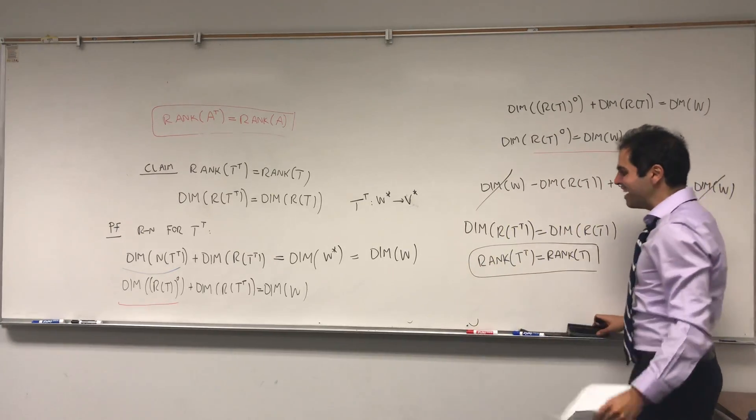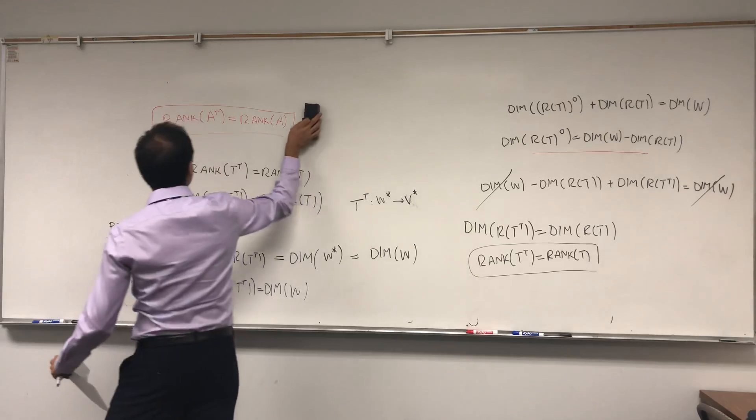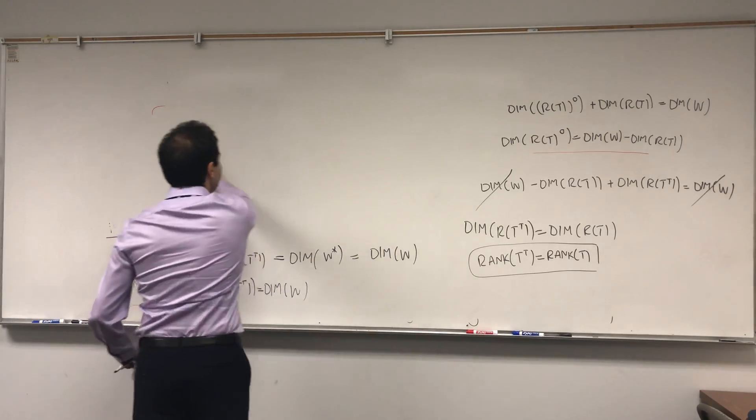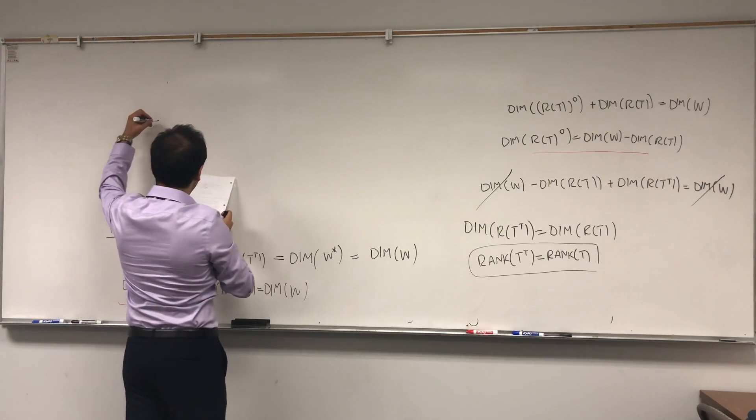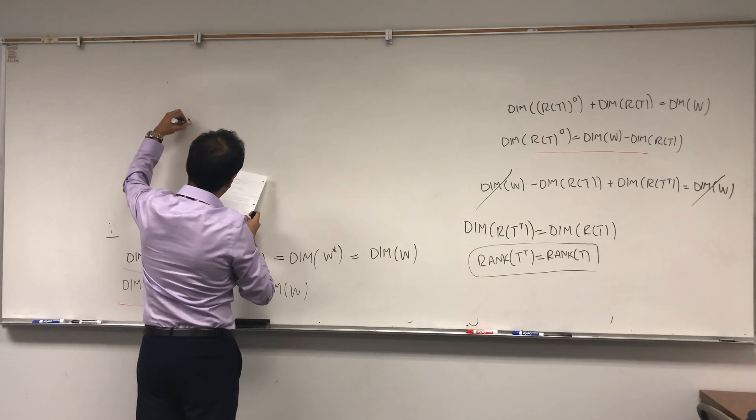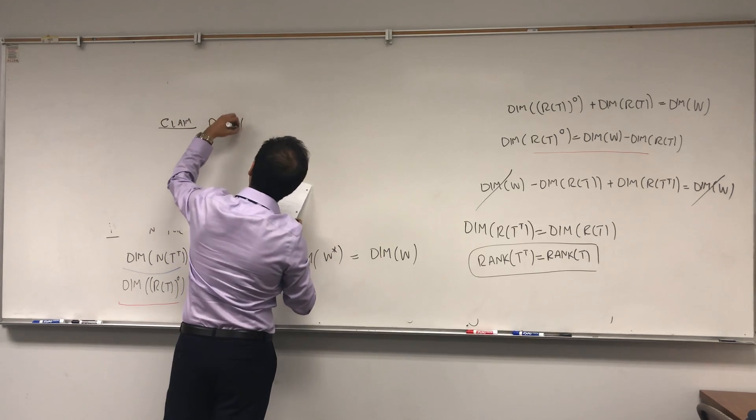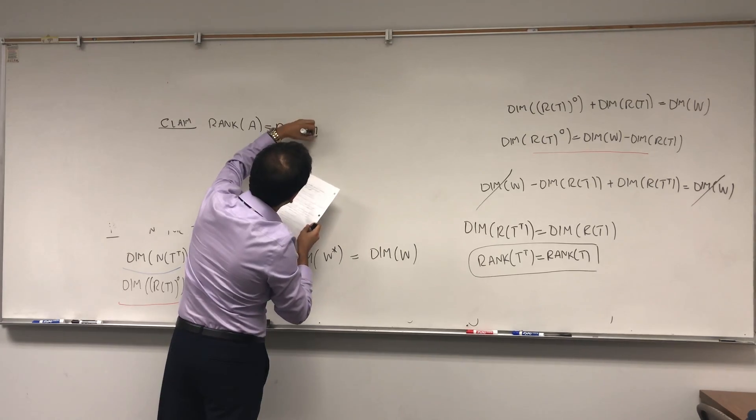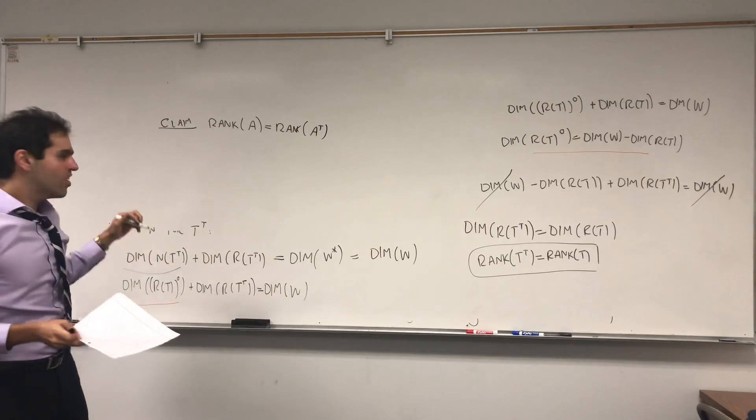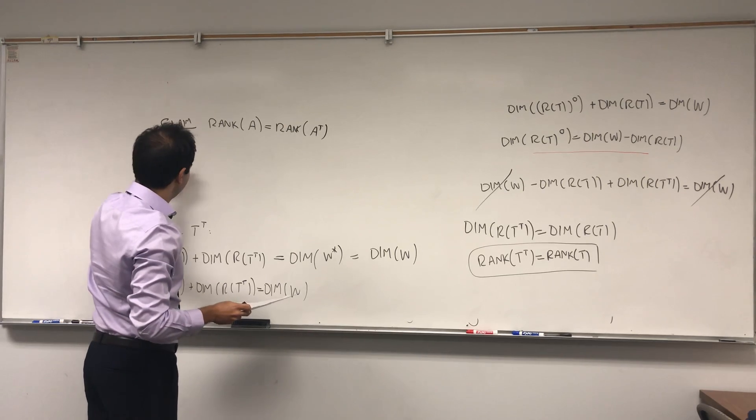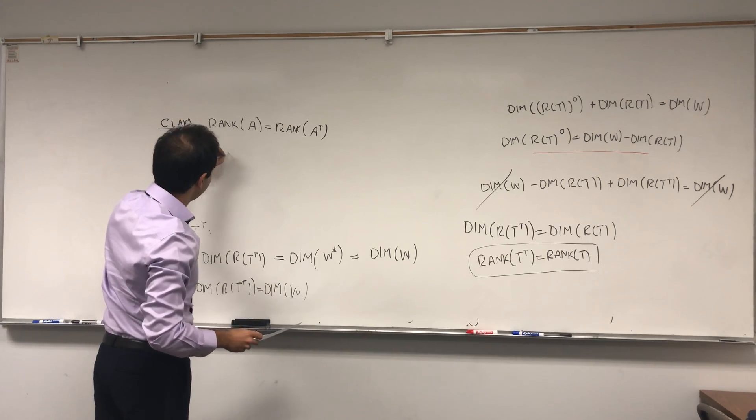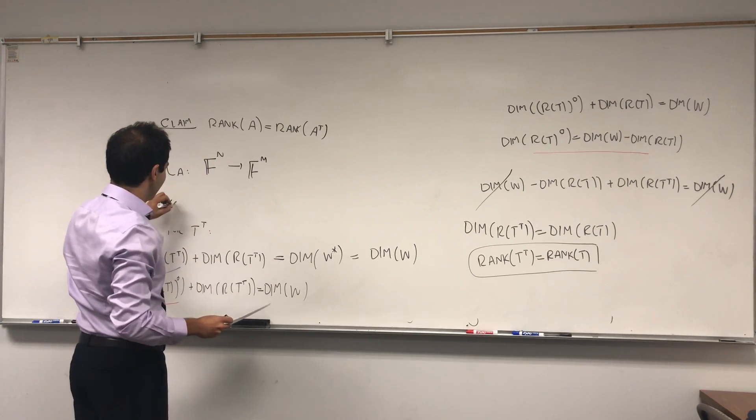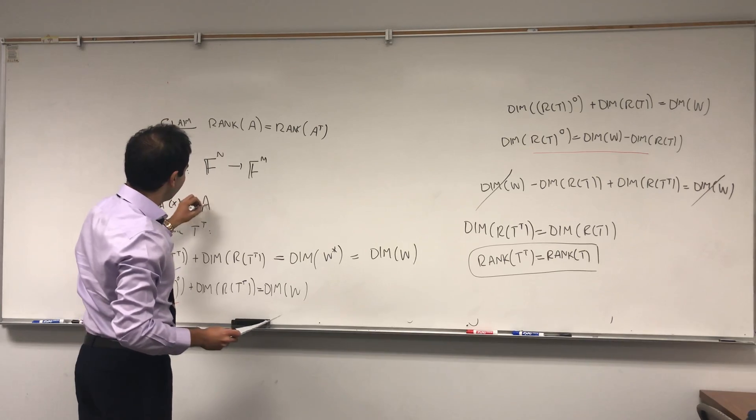So, that's why in finite dimensions, T transpose and T have the same rank. And the question is, how do we conclude that A and A transpose have the same rank? And, well, remember, given a matrix, there's an easy way of finding a linear transformation. It's this thing called LA, like Los Angeles, going from F^m to F^n. And then LAX, worst airport in the world, is A times X.